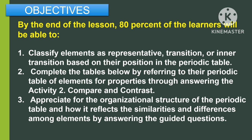For the objectives, by the end of the lesson, 80% of the learners will be able to: first, classify elements as representative, transition, or inner transition based on their position in the periodic table. Second, complete the tables below by referring to the periodic table of elements for properties through answering Activity Number 2, which is all about compare and contrast. Third, appreciate the organizational structure of the periodic table and how it reflects the similarities and differences among elements by answering the guided questions.